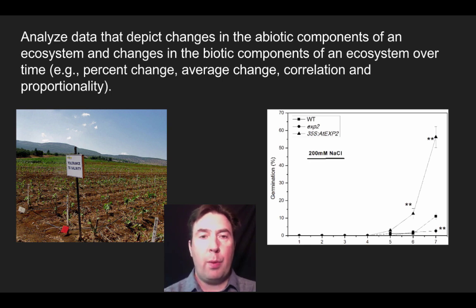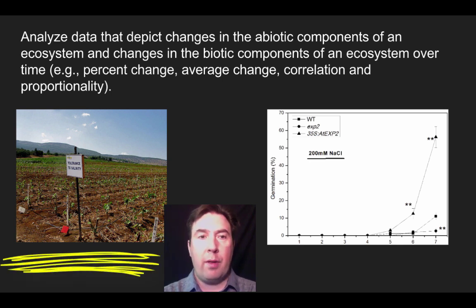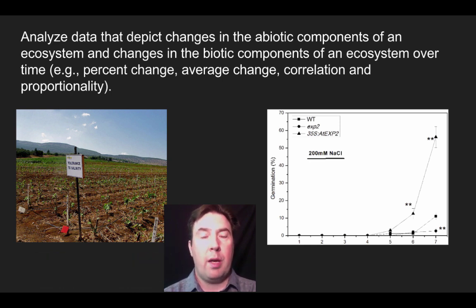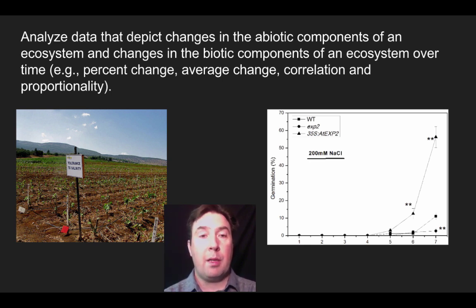One of the things we can do when looking at a given ecosystem is analyze data — specifically how changes in abiotic components will impact biotic components. This can be done through field studies or laboratory studies. Over on the left, I have a diagram showing tolerance to salinity, representing a field where different crops are planted with slightly different salt concentrations to see how salt-tolerant various crops can be. This would be useful in areas close to the ocean where salinity might affect soil and water.